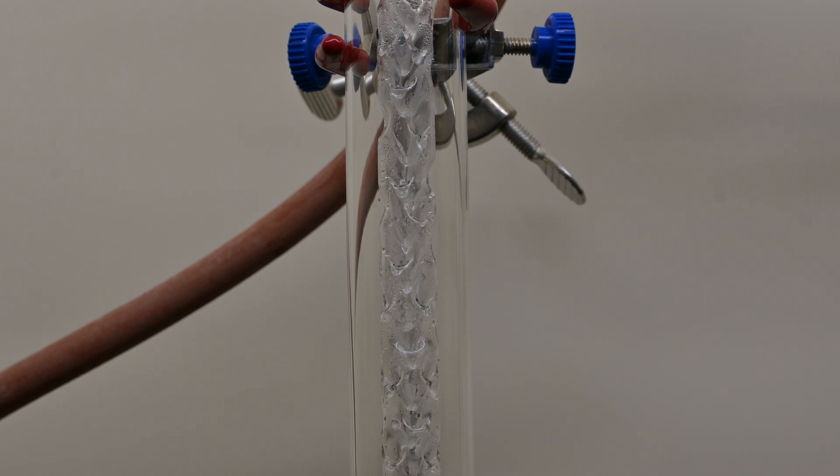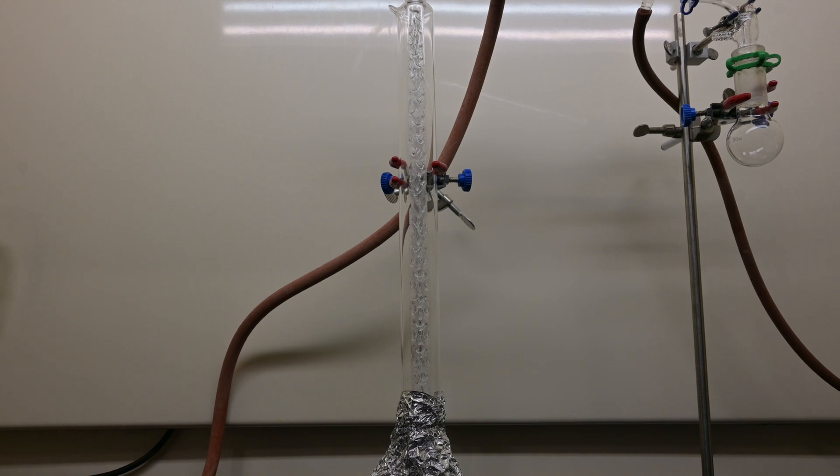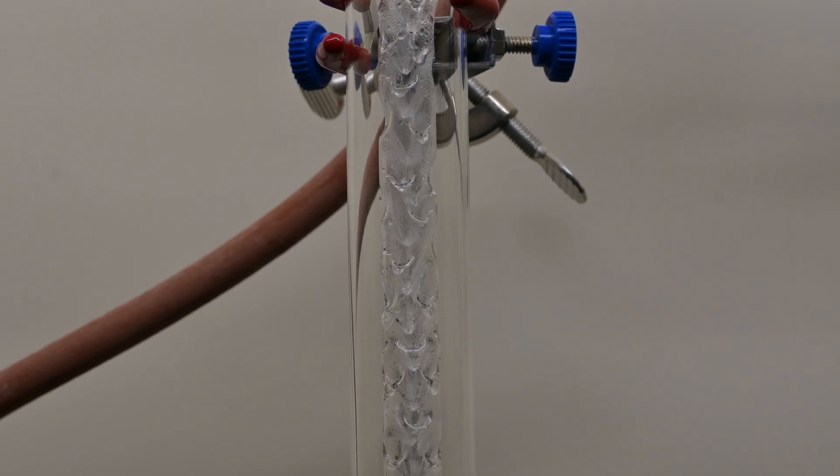The Vigreux column allows for better separation of mixtures by providing a place for the vapor to condense, resulting in a more efficient distillation process. Only substances that boil at the current temperature of the column will make it over to the collection vessel, while higher boiling point compounds will condense and run back into the boiling flask.